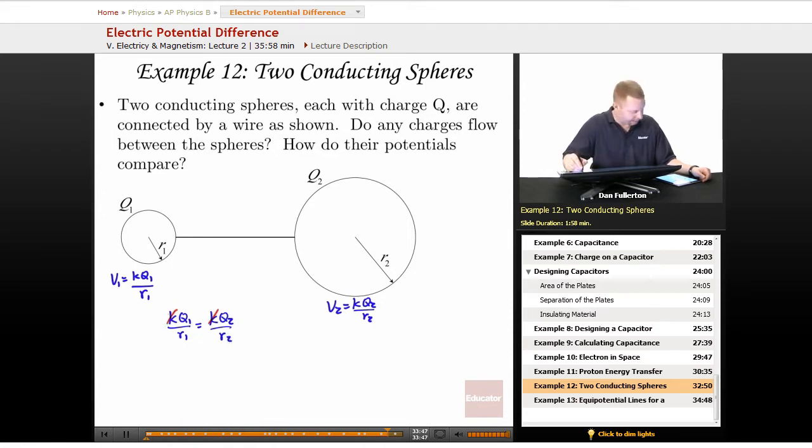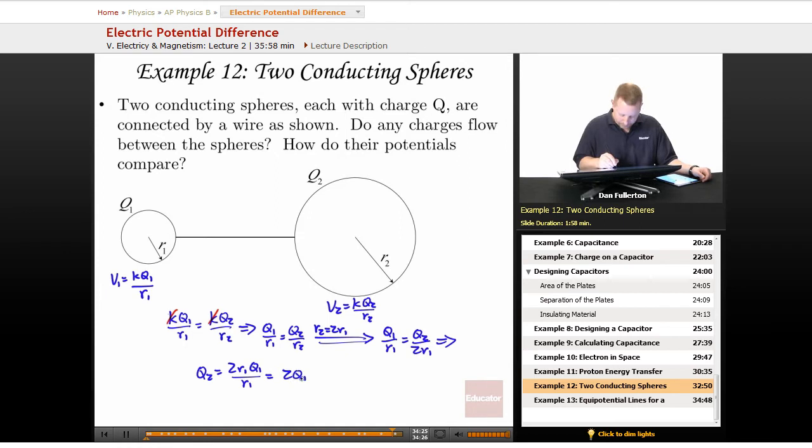Nice simplification we can make there. Divide K out of both sides. Therefore, Q1 over R1 equals Q2 over R2. And since we know that R2 is going to be twice R1, then Q1 over R1 must equal Q2 over 2R1, or a little bit more rearrangement to say that Q2 must equal 2Q1.